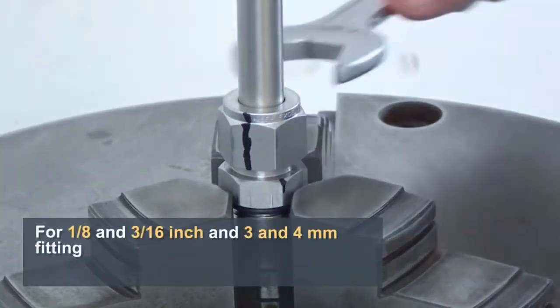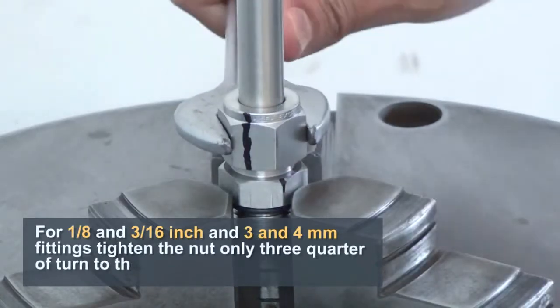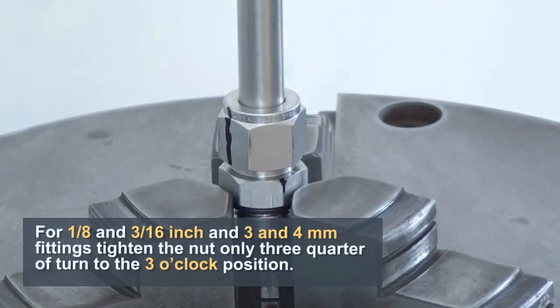For 1/8 and 3/16 of an inch and 3 and 4 mm fittings, tighten the nut only 3 quarters of a turn to the 3 o'clock position.